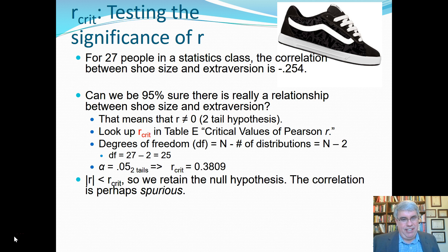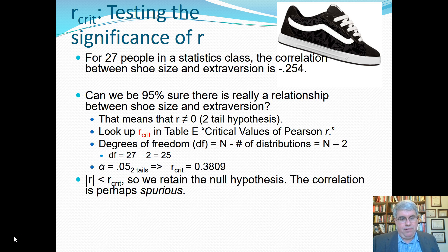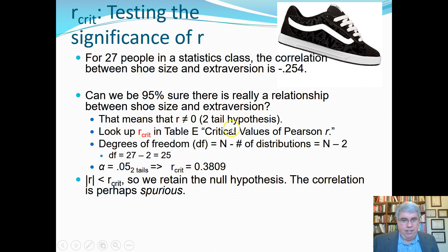The question we can formulate is: can we be 95% sure that there is really a relationship between shoe size and extraversion? That means the correlation doesn't equal zero. We want to make a two-tailed hypothesis that the correlation doesn't equal zero — that it's either really negative or really positive. Here we have a negative correlation, and we want to see if we can reject the idea that it might be zero.